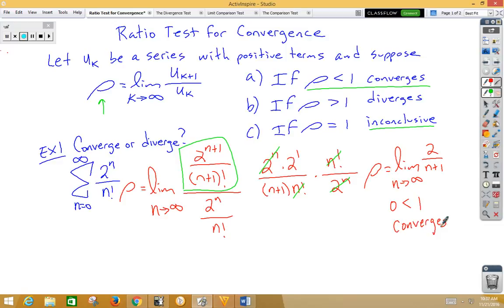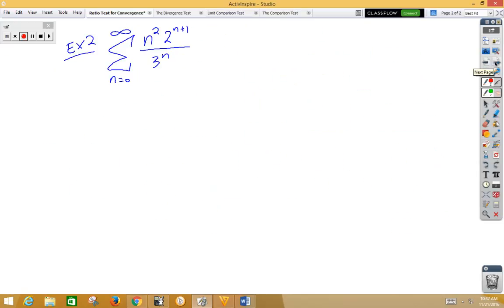Pretty simple. Let's do a second one. So now we've got the series n squared 2 to the n plus 1 over 3 to the n. So the first thing we want to do is find the next term.